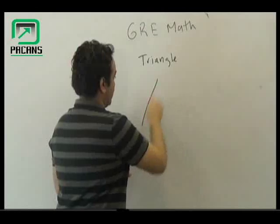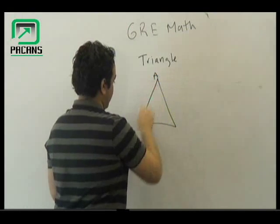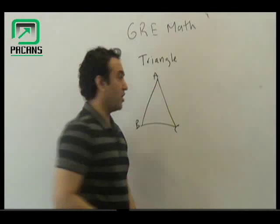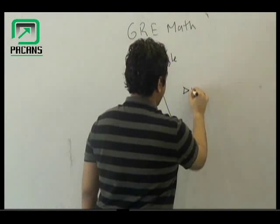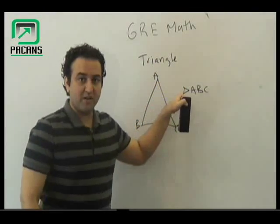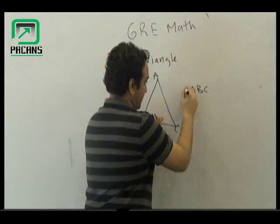So if you have a triangle like this, A, B, C, the way you would be showing it on paper would be triangle A, B, C. It's going to be a smaller triangle, so this stands for the sign of triangle that this thing is actually a triangle.